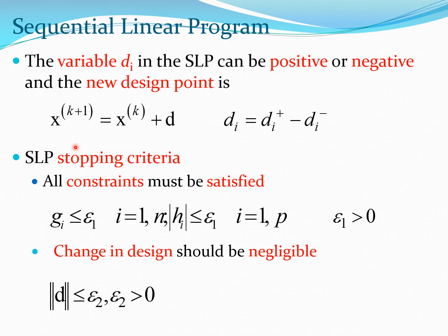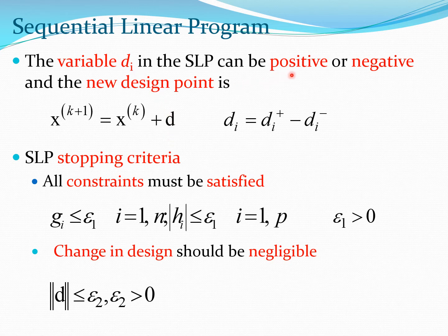The next point is x_{k+1} = x_k + d, where d is delta x_k, the movement in the search direction. Since the variable d_i can be positive or negative, and based on linear programming theory, we split it into two different positive variables in order to solve this problem.